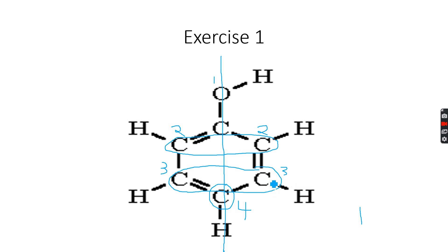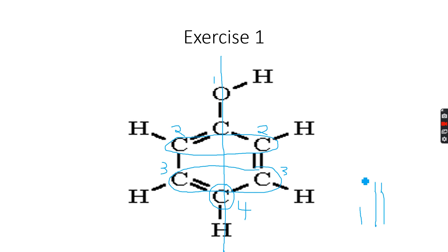The other peak will be a doublet, because the neighboring carbon atom has one H atom and it's in a different chemical environment. So this chemical environment will have a doublet, and it will be integrated to two, because there are two hydrogen atoms. This environment will have a triplet, because there is one neighboring H from here and one from here.